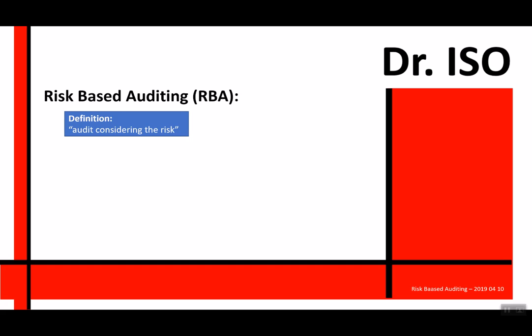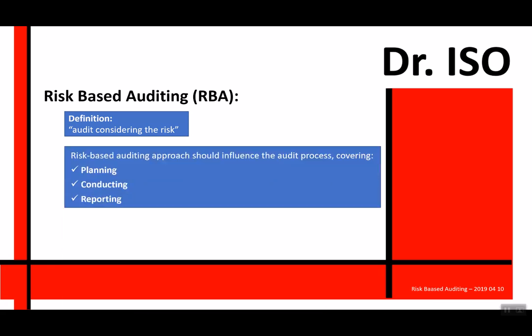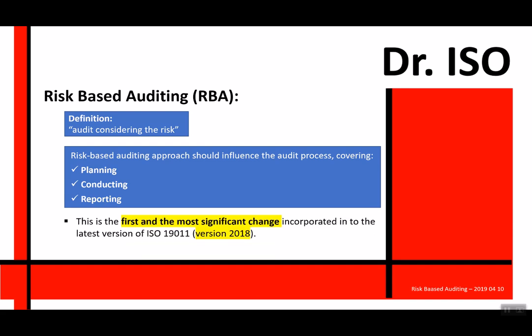The simplest definition for risk-based auditing is: an audit considering the risk. When you plan a risk-based audit, this should influence the audit planning, audit conduct, and the audit reporting. Why risk-based auditing? Because this is the first and most significant change incorporated in the new version of ISO 19011, which is version 2018. This demands the auditor to be highly business focused.